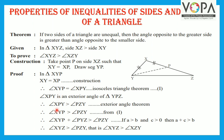Substituting angle XYP in place of XPY: angle XYP plus angle PYZ is greater than angle PZY. Because if A is greater than B, then A plus C is greater than B. Therefore, angle XYZ is greater than angle XZY. Hence proved.